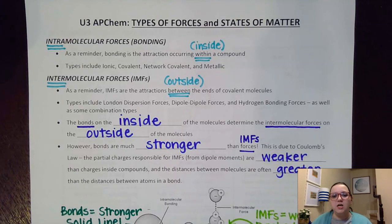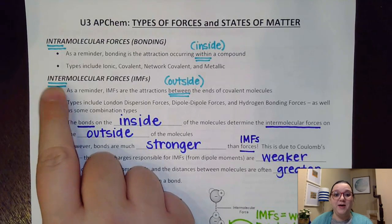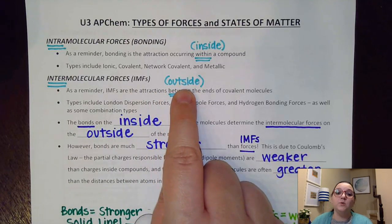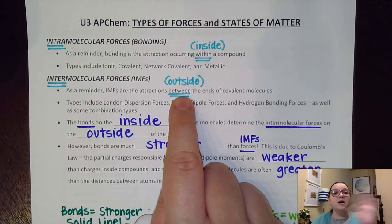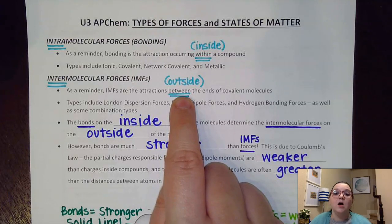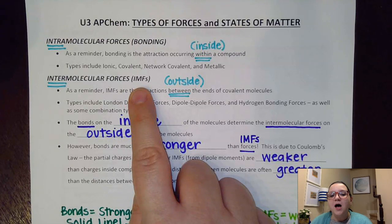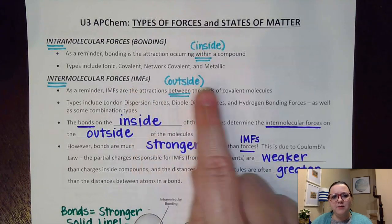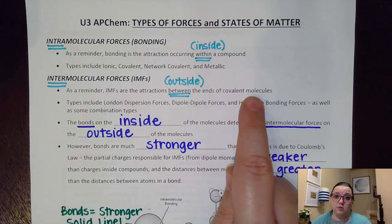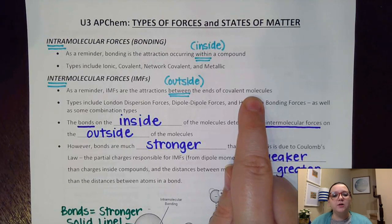If that prefix changes to 'inter,' we have to be careful because inter refers to what's going on outside of the molecules — what's going on between the ends of the different molecules themselves. Intermolecular forces are commonly referred to as IMFs, and specifically, IMFs occur between the ends of covalent molecules. I didn't mention ionic or metallic, and we'll talk about why as we go through these types.